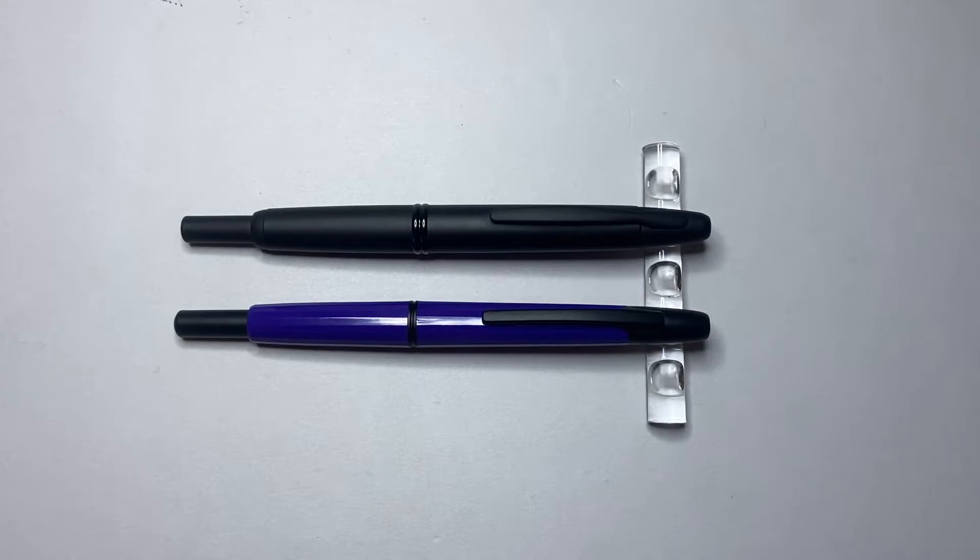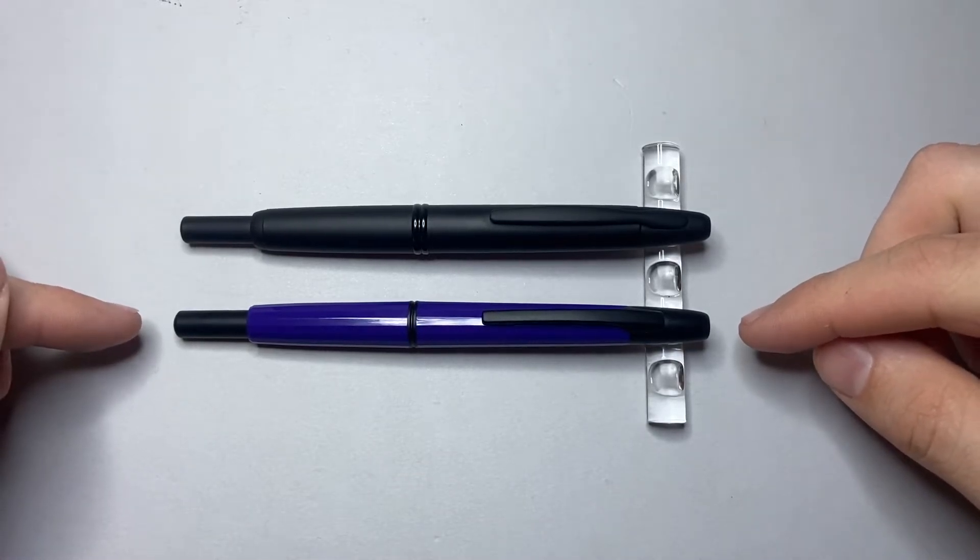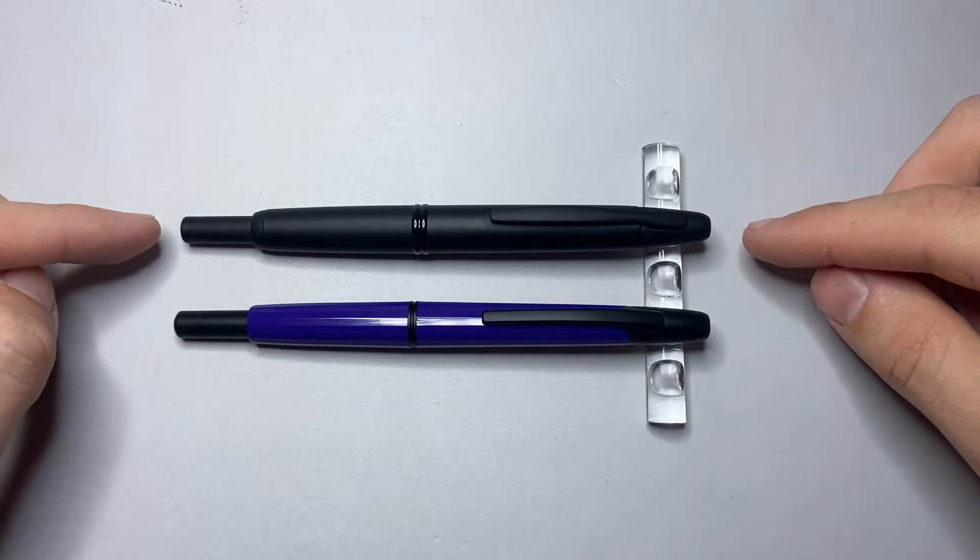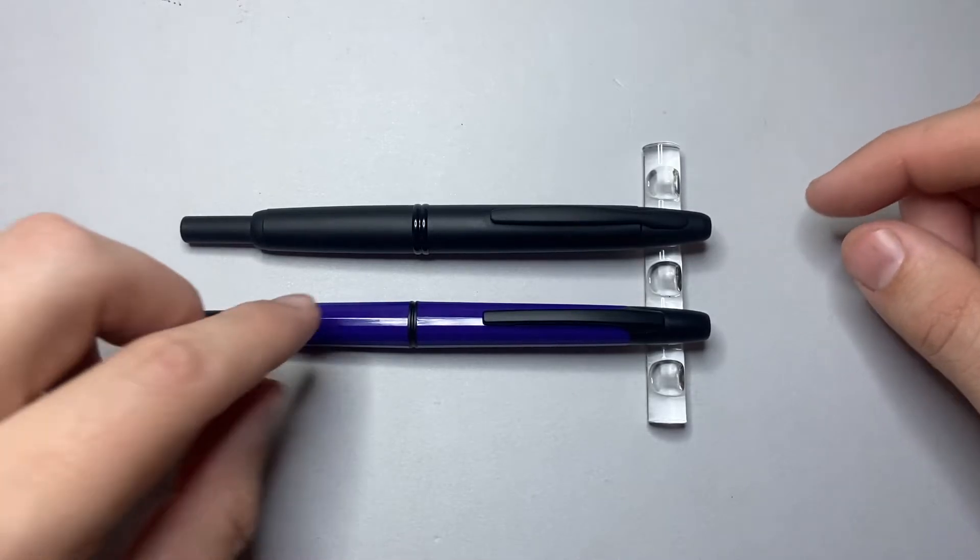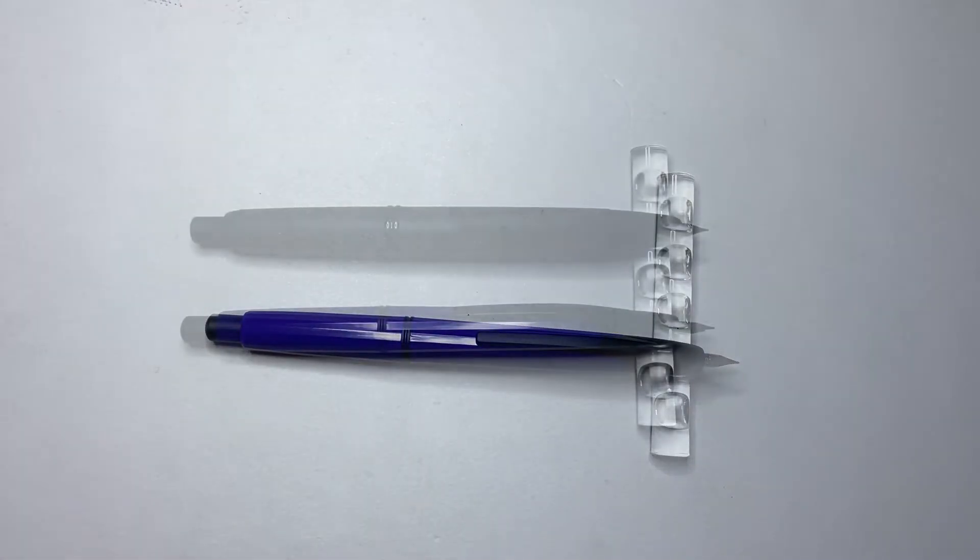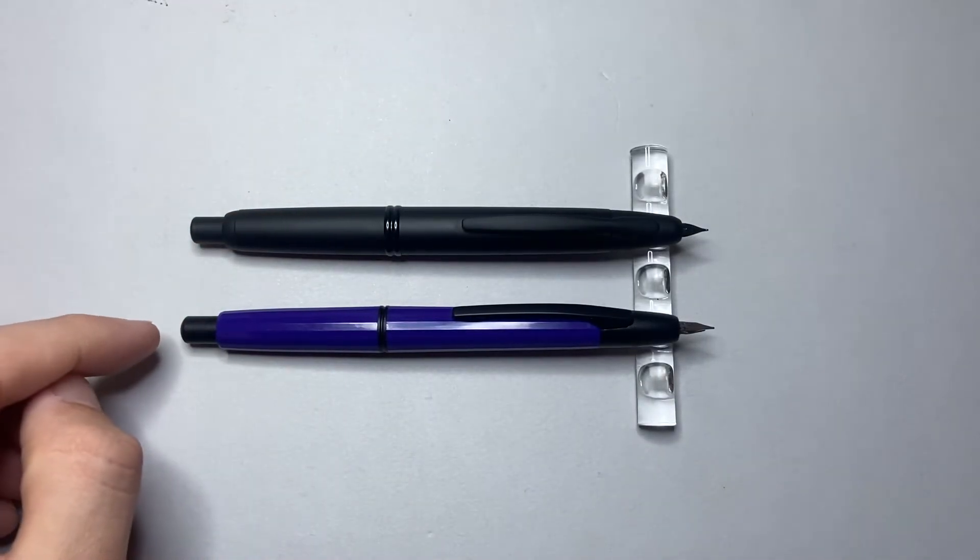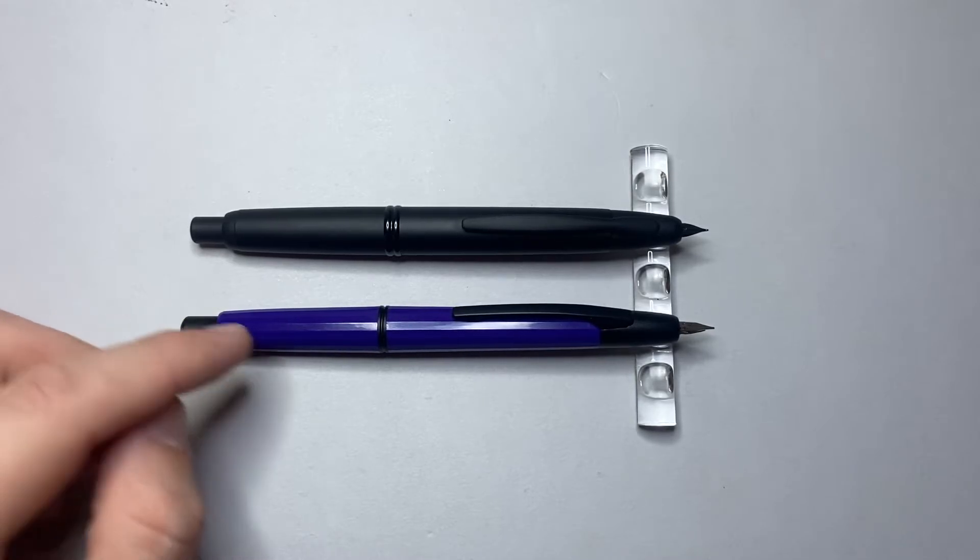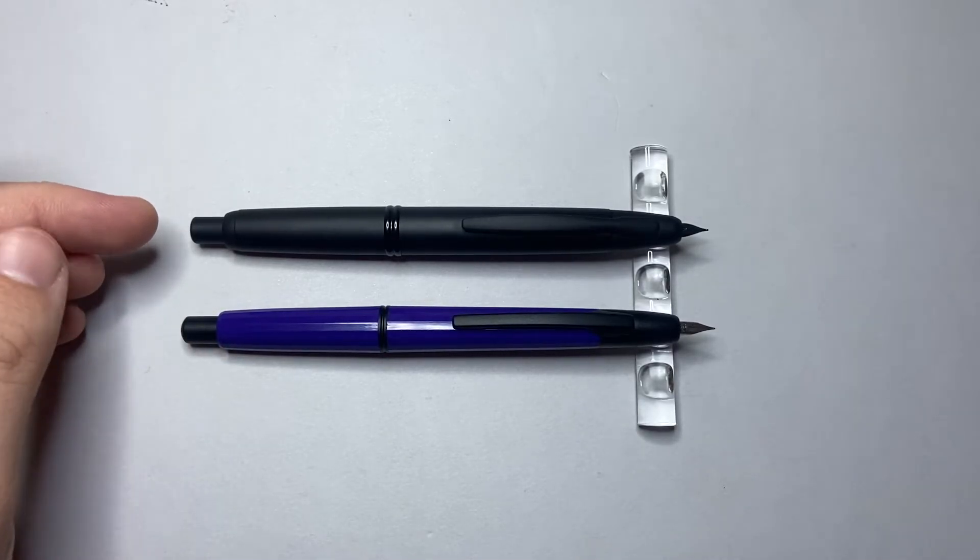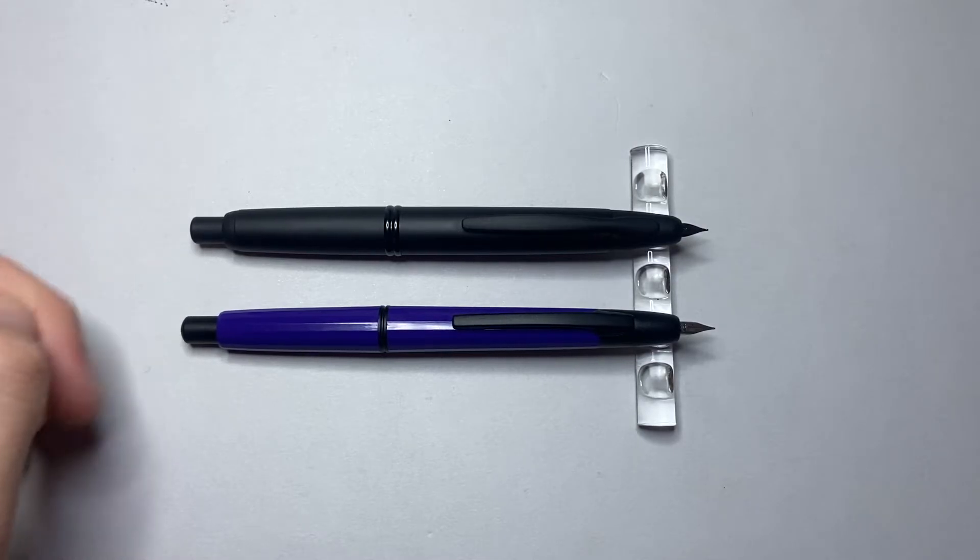Okay, so what are the dimensions? Well, the Moonman Mahjong comes in at 141 millimetres, one millimetre shorter than the Pilot Vanishing Point, which is 142. Now when the nibs are out, the Mahjong comes in at 141. So it doesn't change its length between the retracted version and the out version. Whereas the Vanishing Point is now 139, so it's two millimetres shorter than the Mahjong.